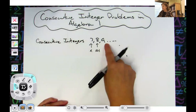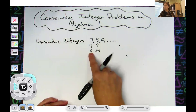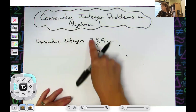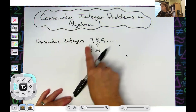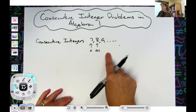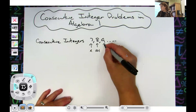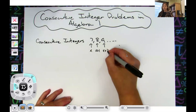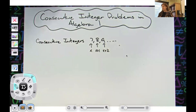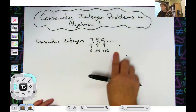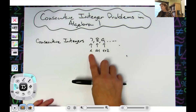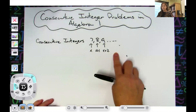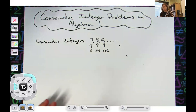How would I get to 9 if I start with X being 7? To get to 9 I would have to add 2. So when we define our variables for consecutive integers, we're going to define them as X, X plus 1, X plus 2, X plus 3, because they are consecutive.